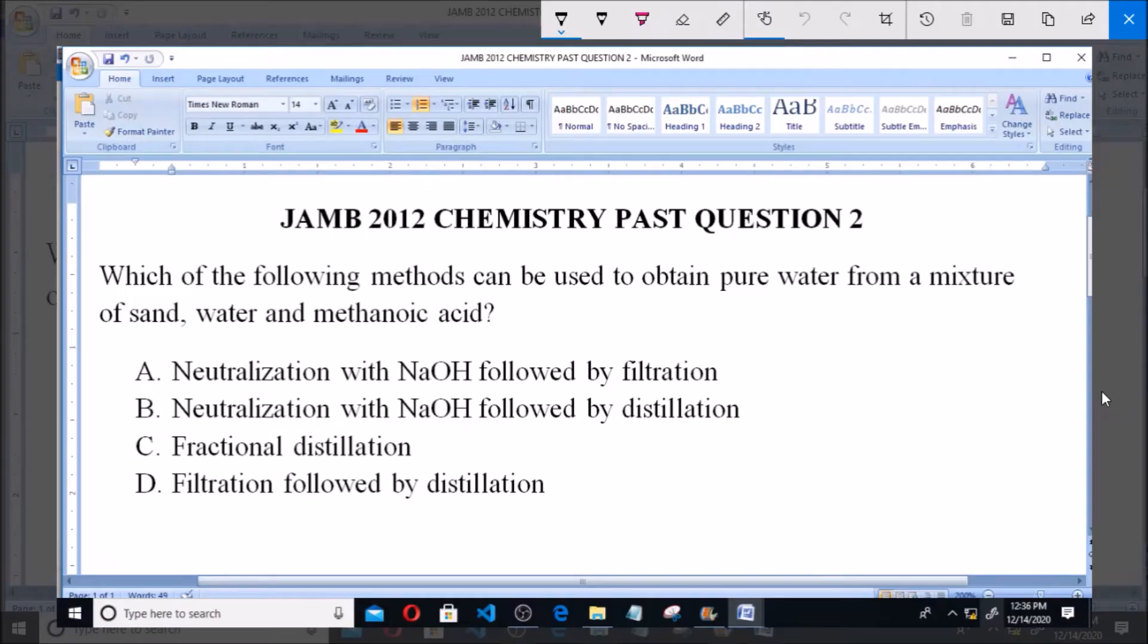Hello, good day and welcome. I will be answering JAMB 2012 Chemistry past question 2: Which of the following methods can be used to obtain pure water from a mixture of sand, water, and methanoic acid? Now, having the mixture of sand, water, and methanoic acid, definitely you know that water and methanoic acid are two immiscible liquids.